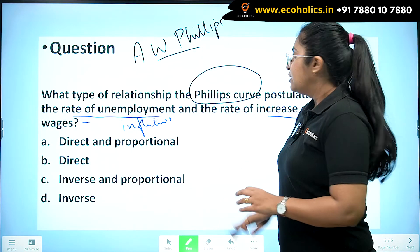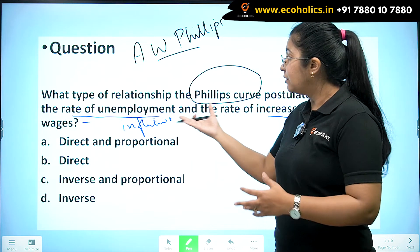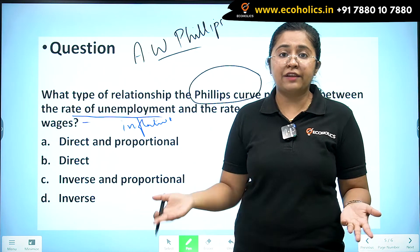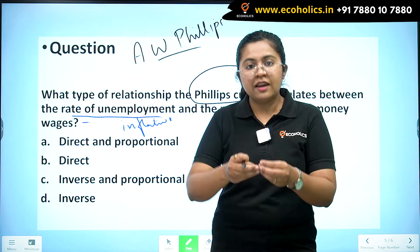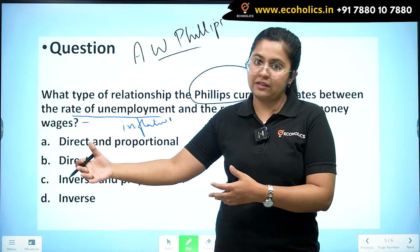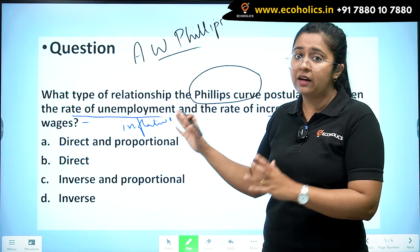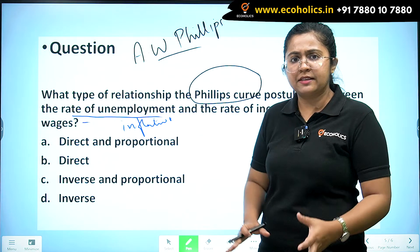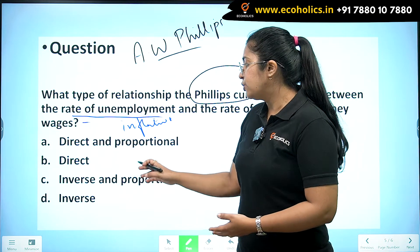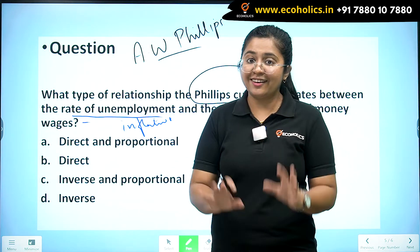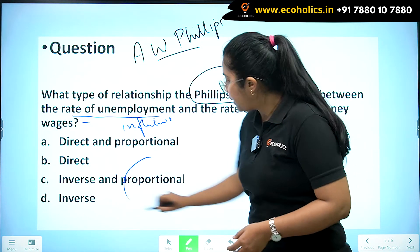They are talking about inflation. So do not think that the Phillips curve is about something different from unemployment rate and inflation rate — it's not different, it's just conceptualized through a trail of connected ideas. Now, looking at the options: direct and proportional, direct, inverse and proportional, inverse. What makes this question tricky is the word 'proportional.'